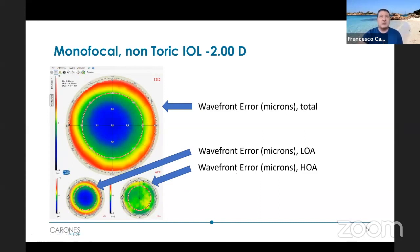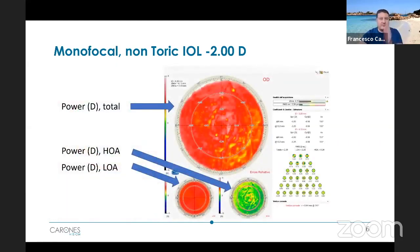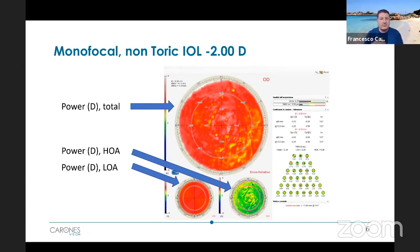This is pretty much what aberrometers do generally speaking. One of the biggest advantages of the OSIRIS, though, is to provide a power map of the aberrations — not the influence of aberrations in terms of heights and visual problems, but more related to how light is distributed through these aberrations in terms of dioptric power.